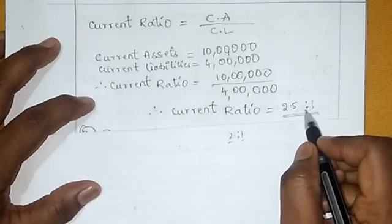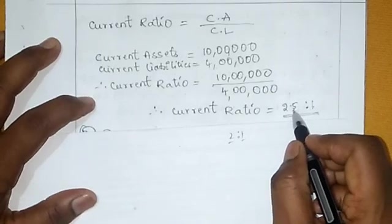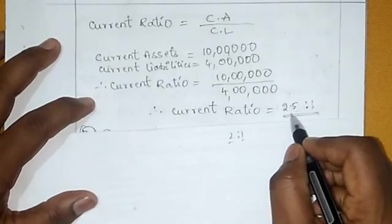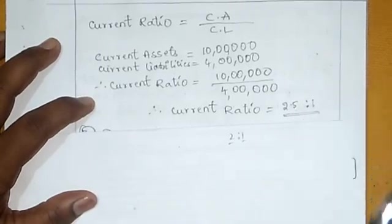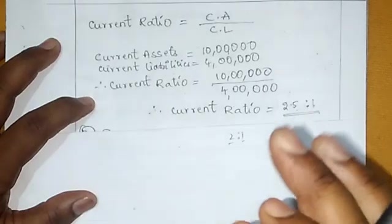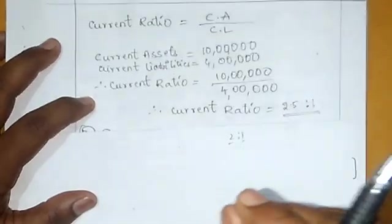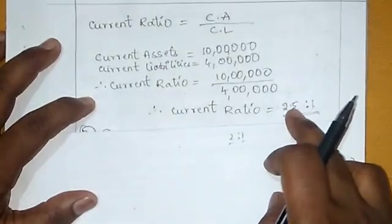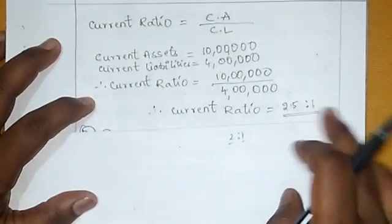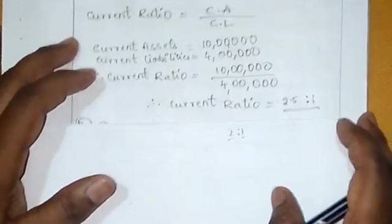2.5:1 is satisfactory. The ideal current ratio is 2:1, and since 2.5 is greater than 2, this is satisfactory.